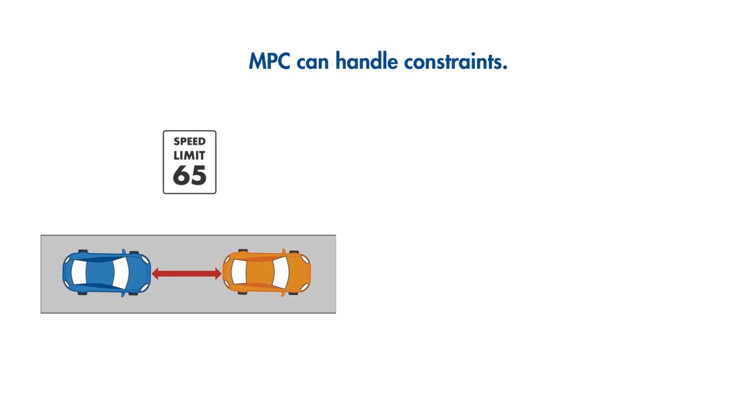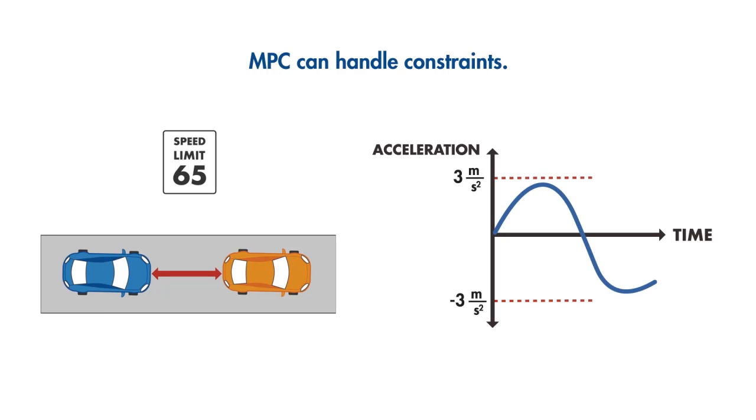There are also constraints due to physical limitations of the car, such as limits on acceleration. If this was an autonomous car controlled by MPC, the controller will track a desired trajectory while satisfying all these constraints.